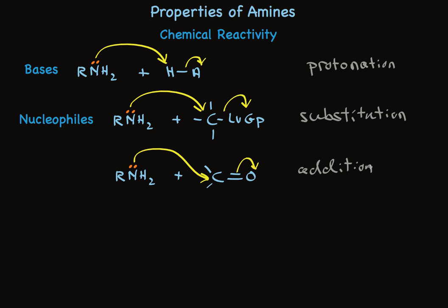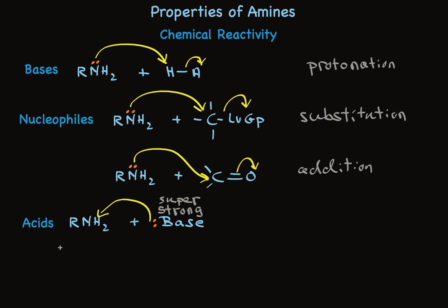Primary and secondary amines can also act as acids. With a super strong base, the unshared pair can abstract a proton from the nitrogen. This requires a very strong base because the pKa of hydrogens attached to nitrogen is about 35 — very low acidity. Once the proton is removed, we make something called an amide anion, which can be a very useful base in organic chemistry. The most widely used example is lithium diisopropyl amide, or LDA, which starts with a secondary amine with two isopropyl groups that has lost a proton and carries a negative charge with lithium as the cation.